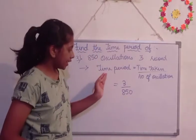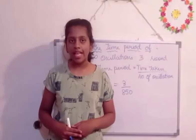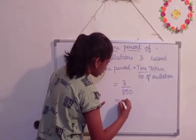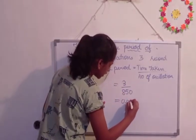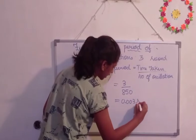So, if we divide 3 by 850, how much answer do we get? That is 0.003 seconds.